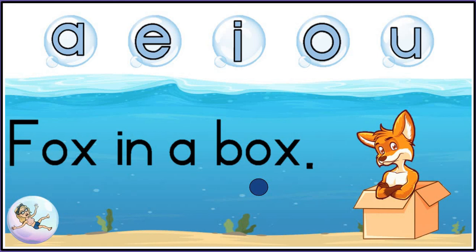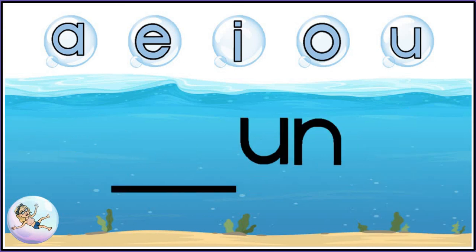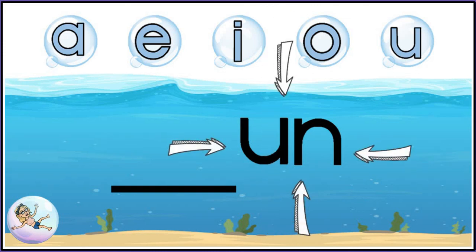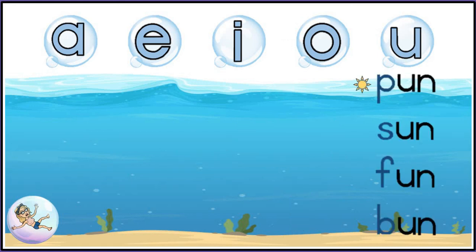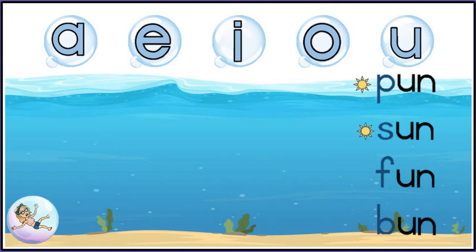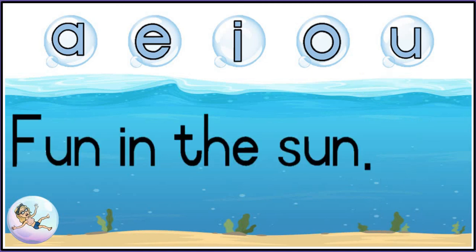Let's move on to our last and final bubble letter and silly short sound. Remember, this is my bubble letter U and this is my silly short sound — un. Can you think of a letter to put in front to make a word? P-un: pun. S-un: sun. F-un: fun. B-un: bun. Well done. Let's try our last sentence: fun in the sun.